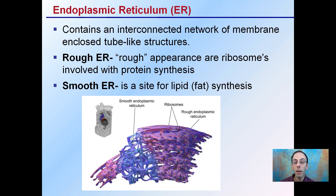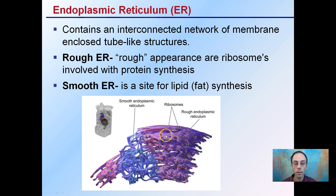The endoplasmic reticulum, or ER, contains an interconnected network of membrane-enclosed, tube-like structures. There's rough ER, which has ribosomes studded on top, and smooth ER, which is more the site of lipid or fat synthesis.